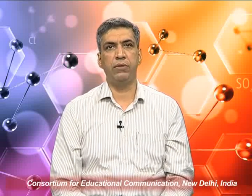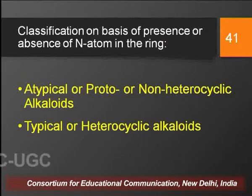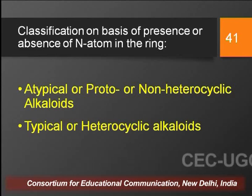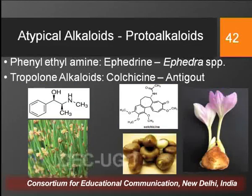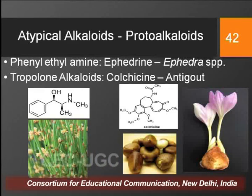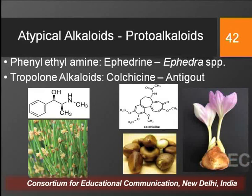The second method of classification is based on the presence or absence of a nitrogen atom in the ring. On this basis, alkaloids are broadly categorized into two categories: atypical alkaloids, also known as proto alkaloids or non-heterocyclic alkaloids, and typical or heterocyclic alkaloids. Atypical or proto alkaloids are derived from amino acids and do not have a nitrogen atom in their heterocyclic ring.